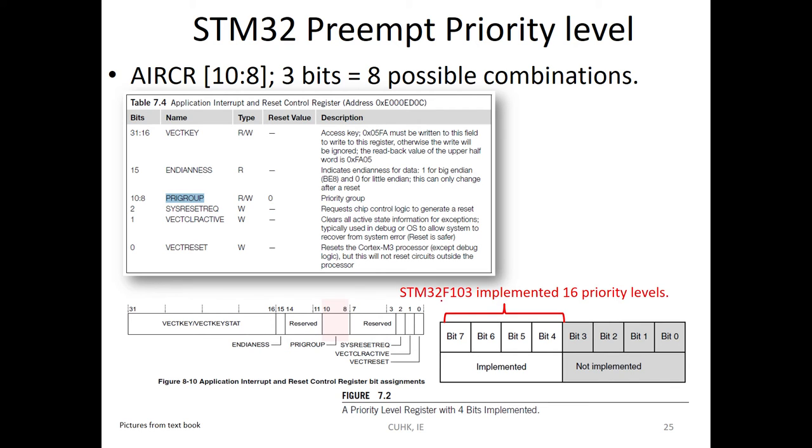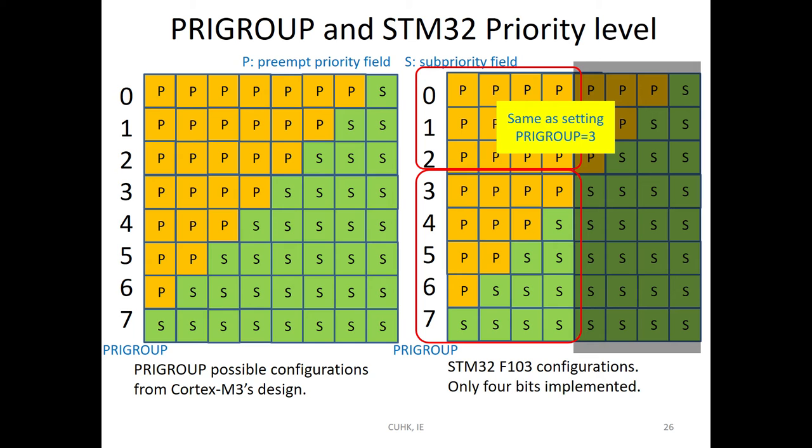Our model only implements this four parts. M3 like this, you can set a lot. But this only implements half. When set 0, 1, 2, 3, they are the same. Then 4, 5, 6, 7, you can see the preemption priority and sub-priority distribution like this.